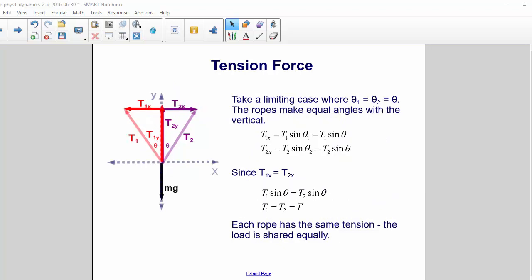Take a limiting case where theta1 equals theta2, which is just theta. The ropes make equal angles with the vertical.